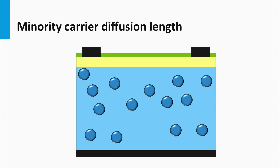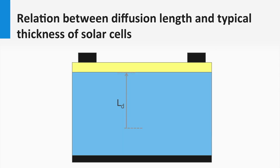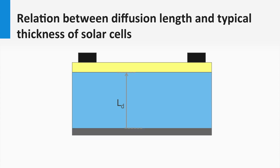Why is that the case? This is demonstrated in a simple animation. Consider photons that penetrate far into the absorber layer before being absorbed — we want these charge carriers to be separated at the p-n junction or the back contact. But if these charge carriers are excited at a depth deeper than the typical diffusion length, they recombine within the diffusion length before arriving at the p-n junction; their lifetime is too short. All charge carriers generated at a depth greater than the diffusion length from the p-n junction cannot be collected, whereas those generated at a depth shorter than the diffusion length can be collected. Thus, the diffusion length of the minority charge carrier limits the maximum thickness of the solar cell.